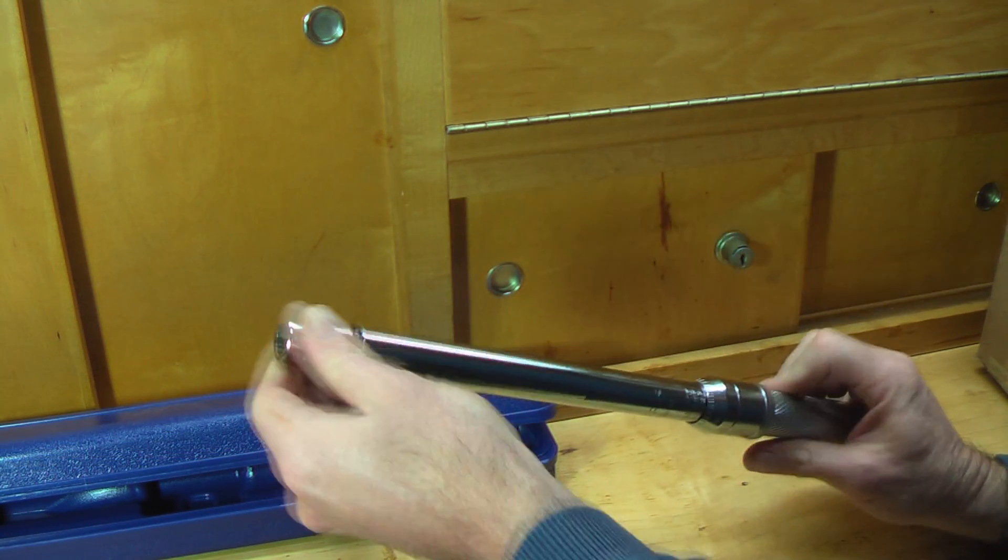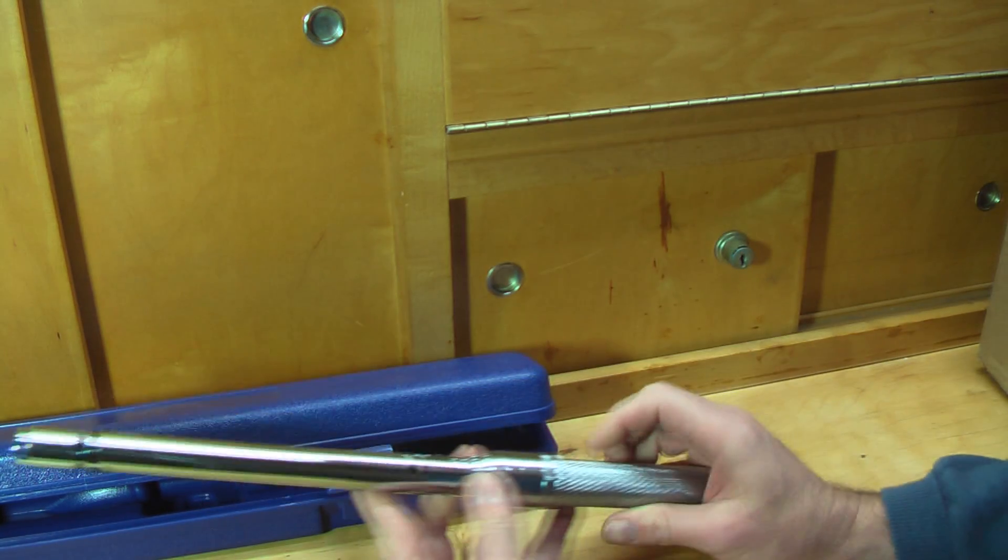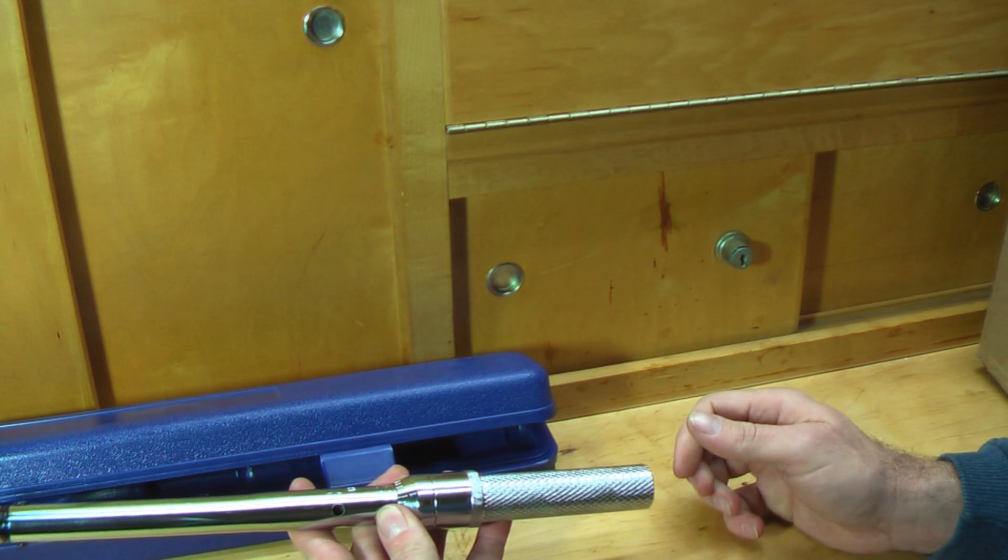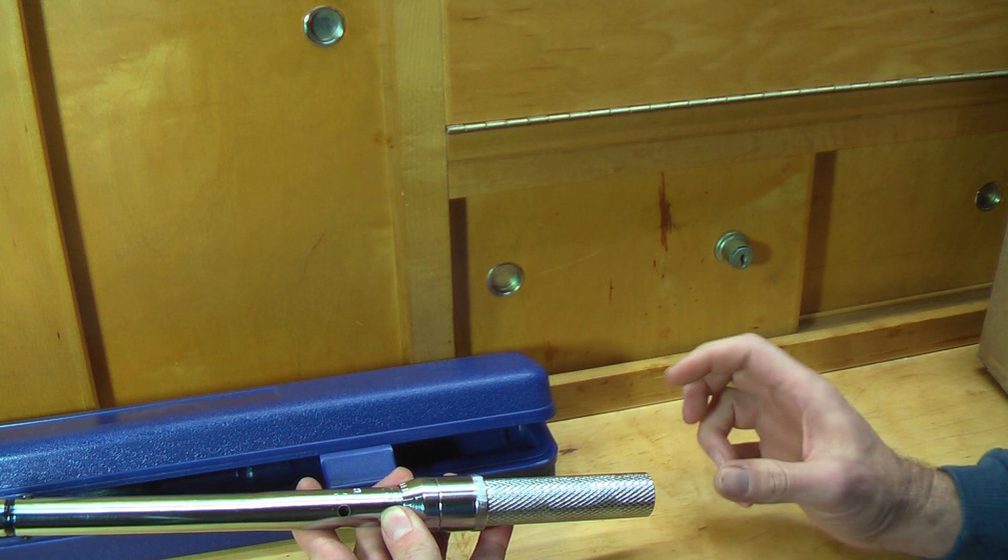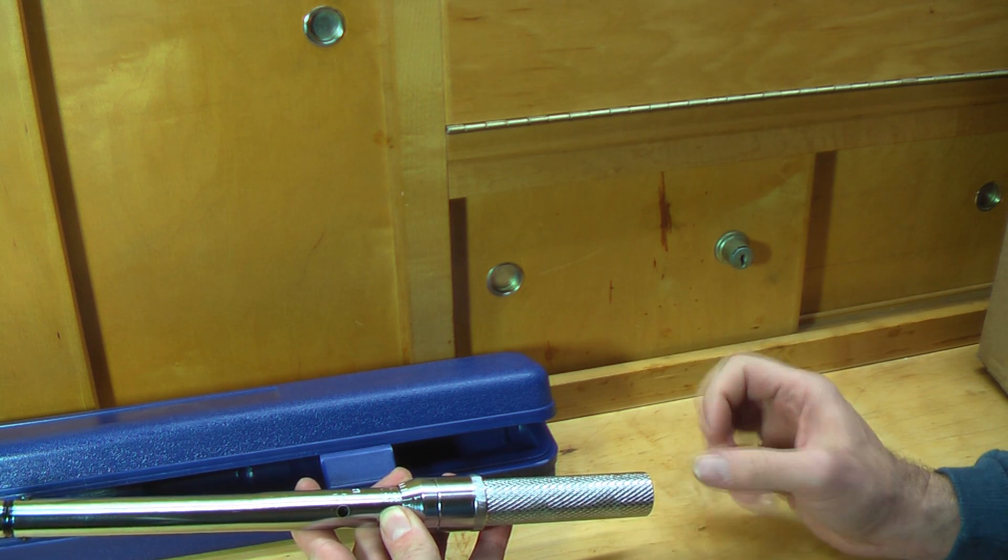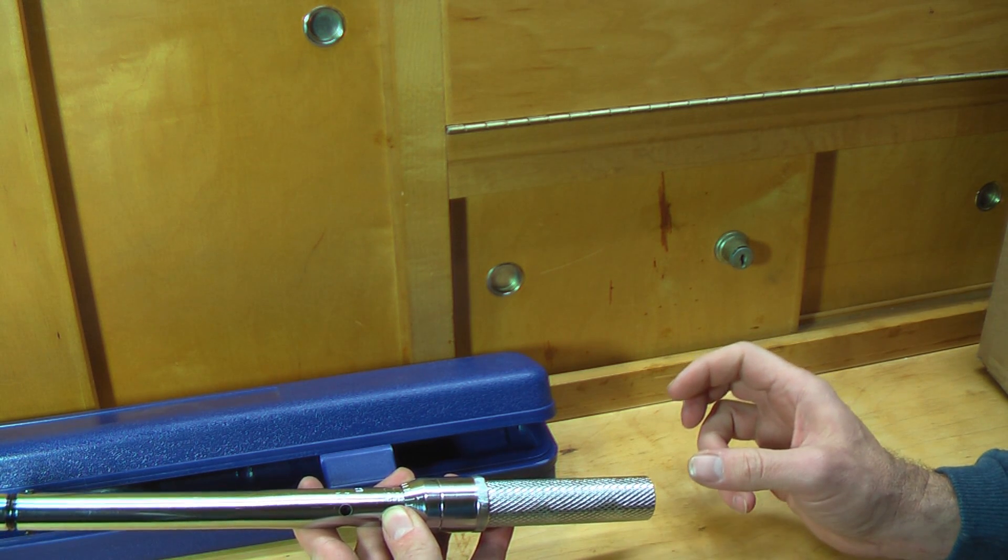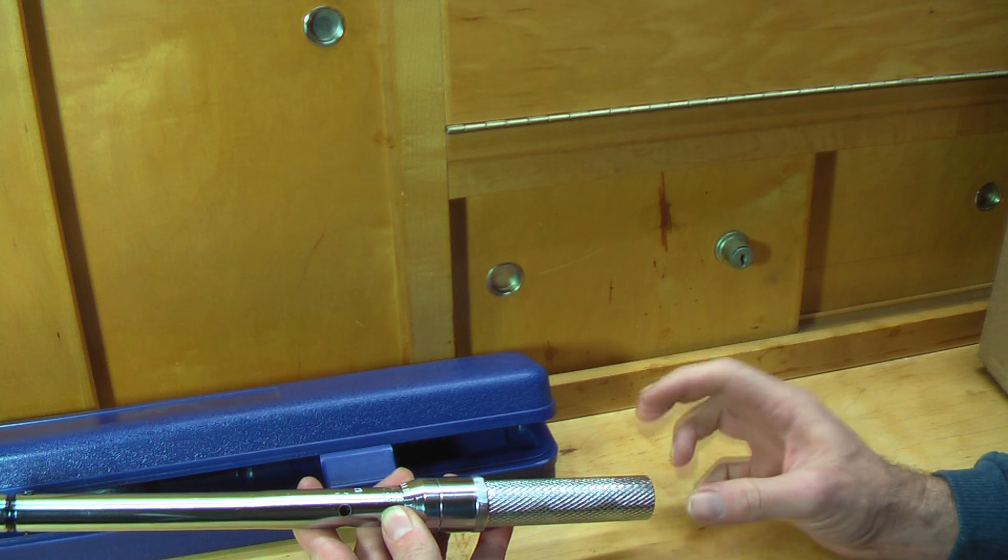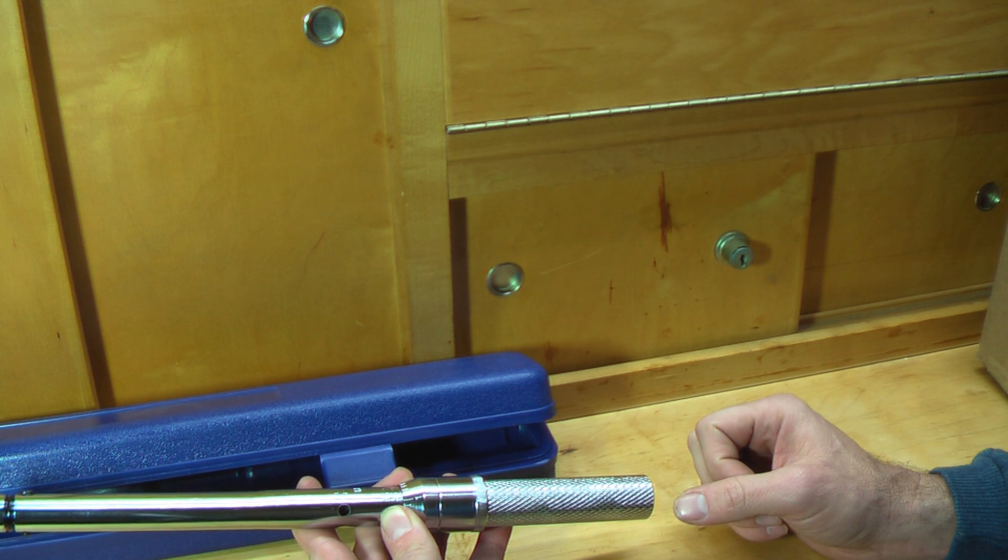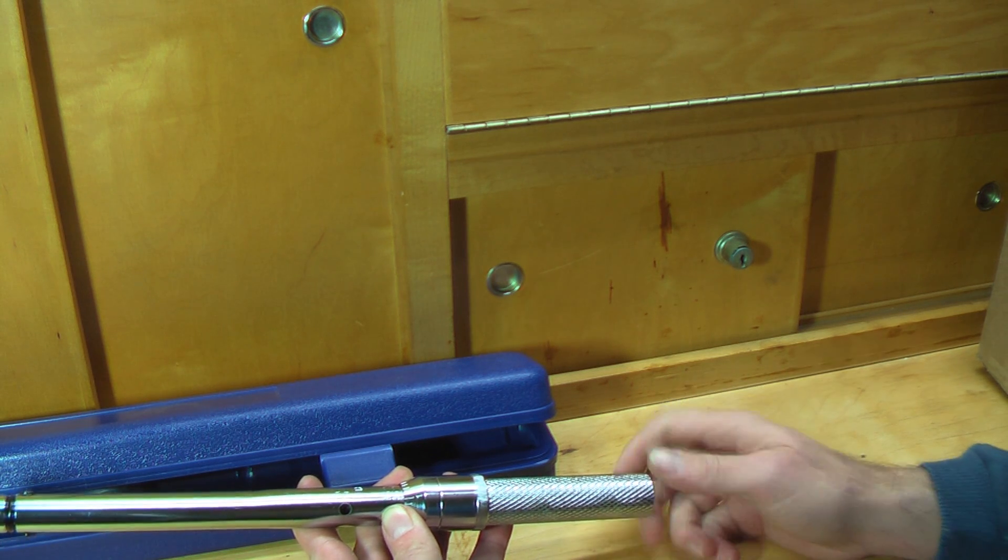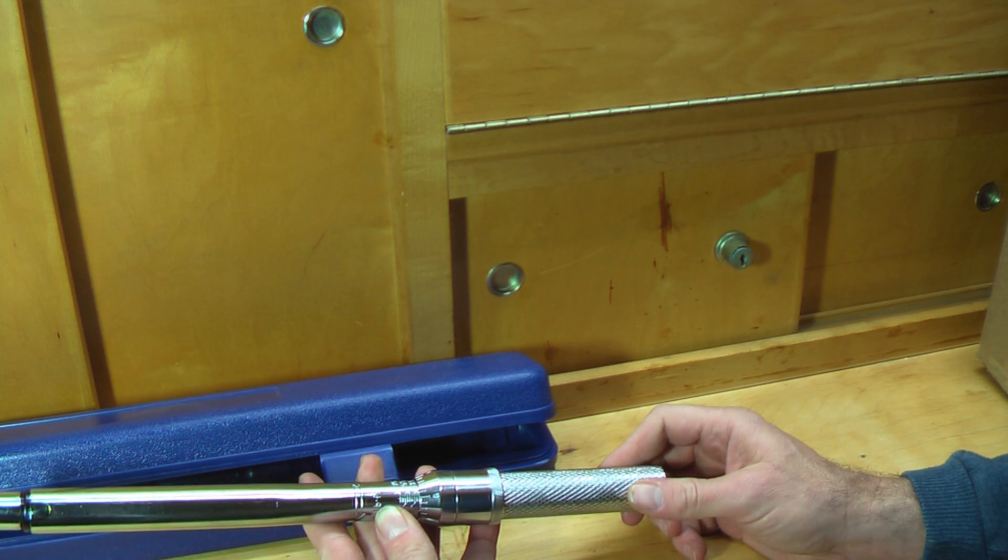Also, we want to take it to another level. We want to try this with bullet swaging with the CH4D dies, not so much for core seating, but more for point forming. Sometimes there's little inconsistencies here or there. You want to know when you're over-torquing your point forming operation.